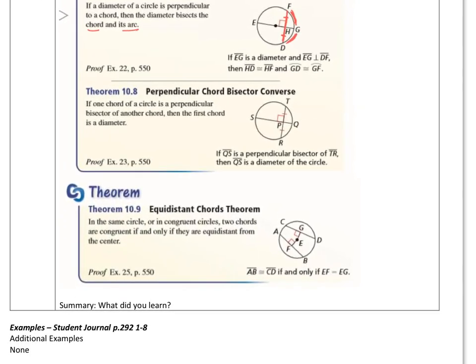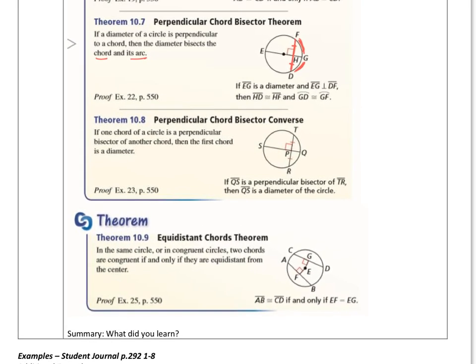The Perpendicular Chord Bisector Converse. If one chord of a circle is a perpendicular bisector of another chord, then the first chord is a diameter. So since I've got these two chords, if this is a perpendicular bisector right here, we could see that this is congruent and that's perpendicular, then that's got to be the diameter.